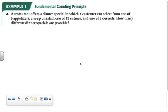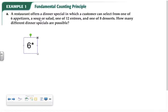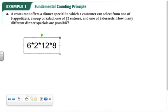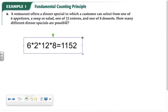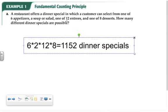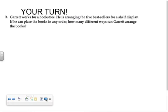In example one part a, a restaurant offers six appetizers, a soup or a salad, twelve entrees, and eight desserts. How many different dinner specials are possible? There are six possible appetizers times two choices for soup or salad times twelve entrees times eight desserts. Multiplying all of this together gives 1,152 possible dinner specials.